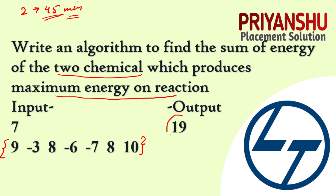As you can see, the output is 19. How? We just need to find the two maximum values in the array. The maximum element in the array is 10 and the second largest element is 9, so 10 plus 9 equals 19 — that's your answer. This is the level of L&T coding questions.